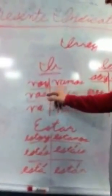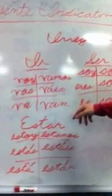Los irregulares. Hay tres irregulares: Ir son Voy, Vas, Va, Vamos, Vais con acento en la A, Van. Estar: Estoy, Estás con acento en la A, Está con acento en la A, Estamos, Estáis con acento en la A, Están con acento en la A.